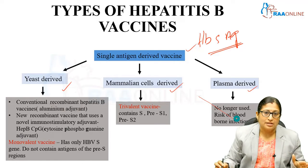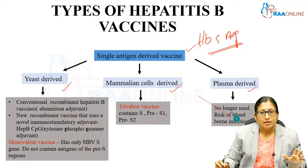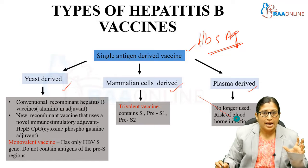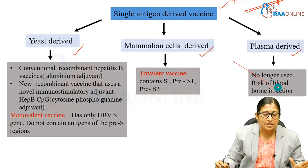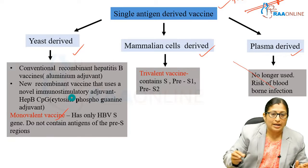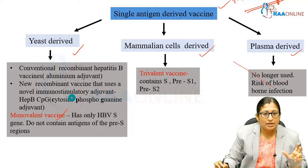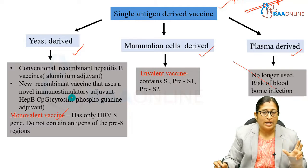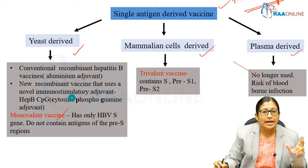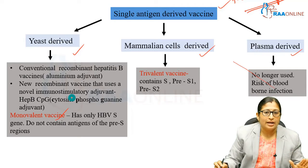Let us discuss about the yeast-derived vaccine. Here, the HBV S gene — the S gene — is cloned in yeast cells, and that is why it is called the yeast-derived vaccine. These vaccines are monovalent vaccines, meaning they have only the HBV S gene. We said the S gene has three regions — pre-S1, pre-S2, and the S region — but these yeast-derived vaccines do not contain antigens for the pre-S region.